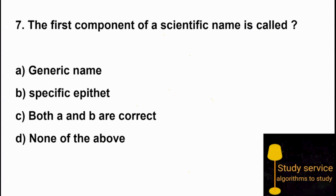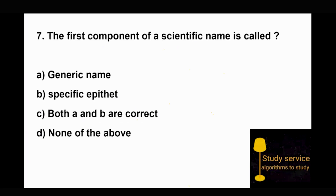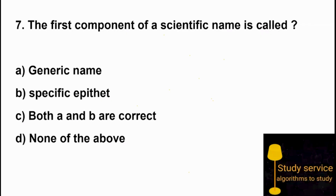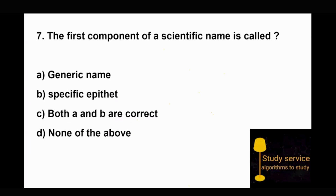Question 7: The first component of a specific name is? For example, mango's scientific name is Mangifera indica, and for humans it is Homo sapiens. Option A: generic name. Option B: specific epithet. Option C: both A and B are correct. The first component of a scientific name is the generic name — that is the genus. So Option A is the right answer.